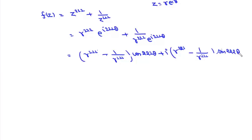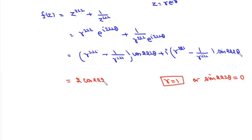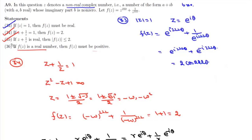For f(z) to be real, the imaginary part must be zero, so either r = 1 or sin(222θ) = 0. If r = 1, f(z) = 2cos(222θ), which can be positive or negative. If sin(222θ) = 0, then cos(222θ) = ±1, so f(z) can again be negative. Therefore, f(z) is not always positive, and statement 36 is incorrect.